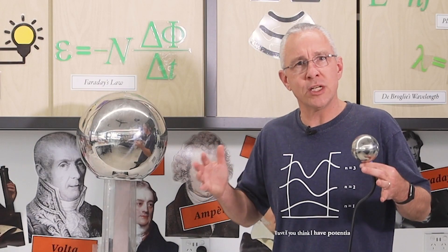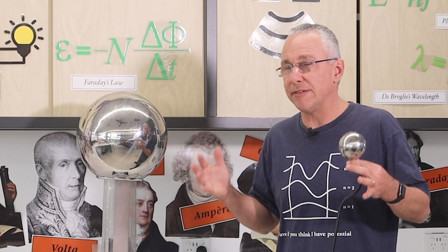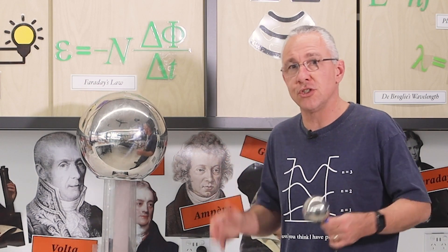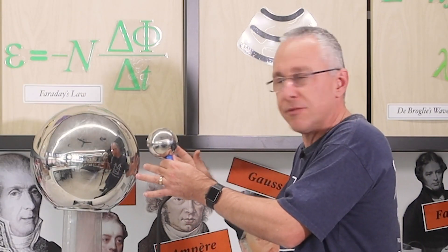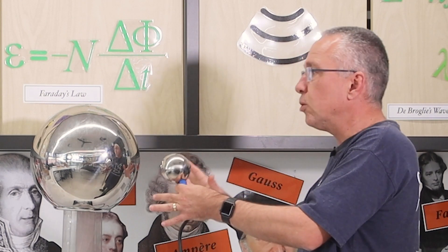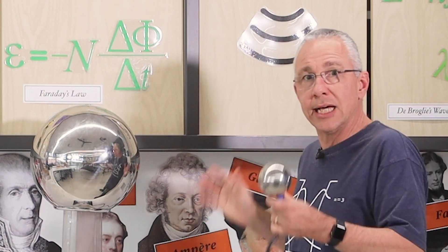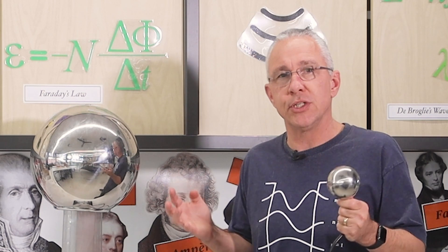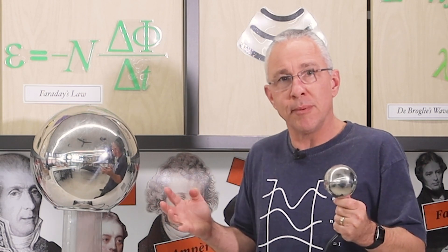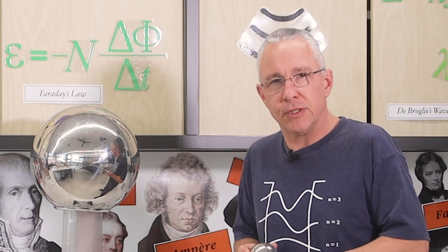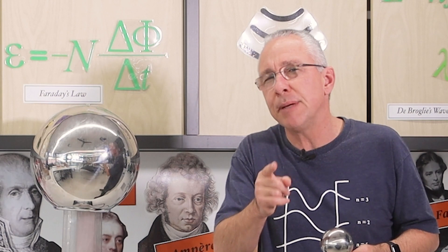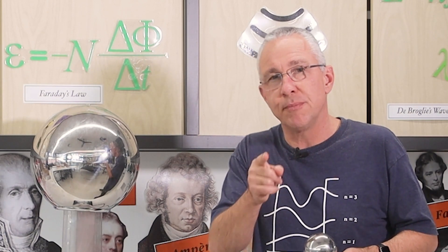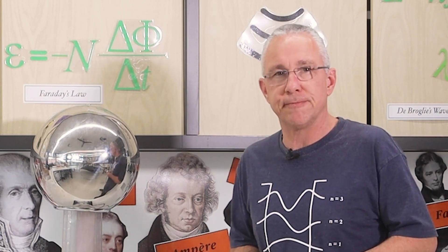The Van de Graaff generator is a wonderful tool to develop an understanding of electric fields and voltage. When turned on, it will develop a positive charge, therefore an electric field will be radiating out, and if this was a positive test charge moving towards it, it would increase the voltage. But the problem is you can't see the electric field lines. Is there a better way to visualise electric fields to help develop a better understanding of voltage?